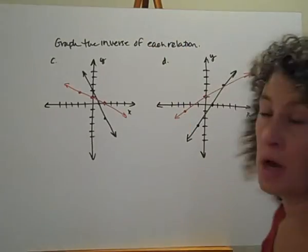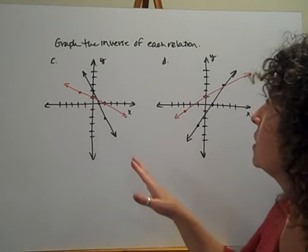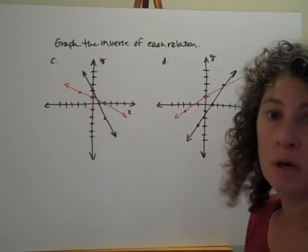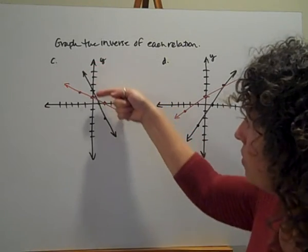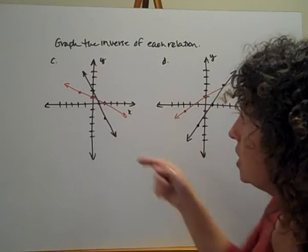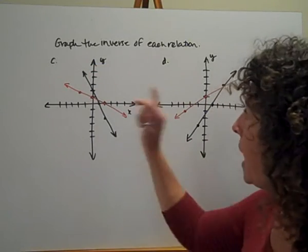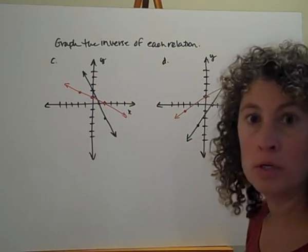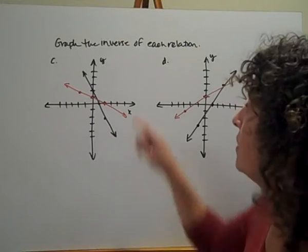Let's take a look at what those look like on a graph. So we've seen ordered pairs. We've seen tables. Let's take a look at a graph. Graph the inverse of each relation. So here's my original relation here with this line. And I'm going to look for some points here. And I'm going to do the same thing. I'm going to swap my x and my y values.